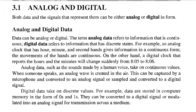Analog data, such as sounds made by the human voice, take a continuous value. When someone speaks, an analog wave is created in the air. This can be captured by a microphone and converted to an analog signal, or sampled and converted to a digital signal. Digital data take on discrete values — for example, data stored in computer memory in the form of zeros and ones. They can be converted to a digital signal or modulated into an analog signal for transmission across a medium.